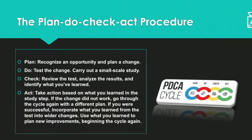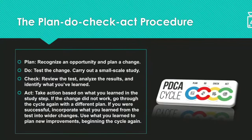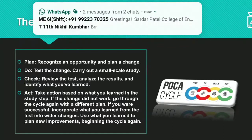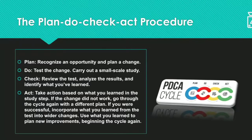If we are successful and our results are correct, then we need to incorporate what we learned from the test for wider changes, look for more improvements, and use this to plan new assignments, new improvements, and new methods — which begins the cycle again. Even if we have implemented a plan successfully, we still need to think about further improvement and make a new PDCA cycle for that purpose.